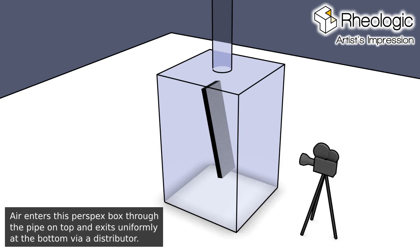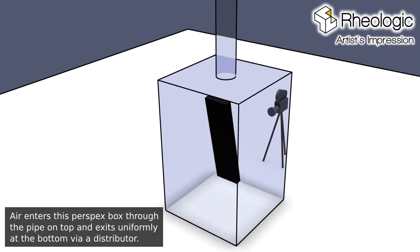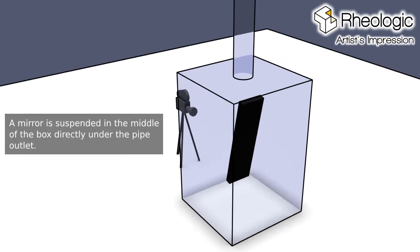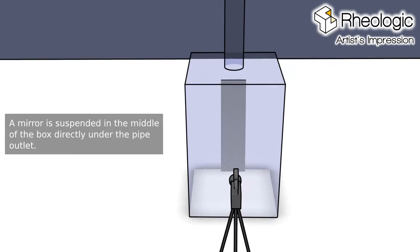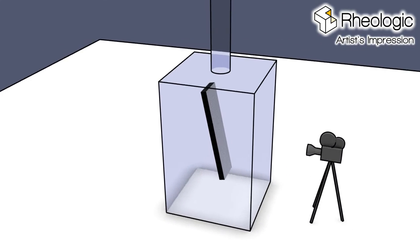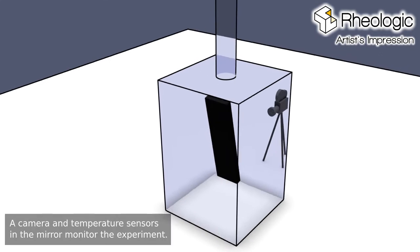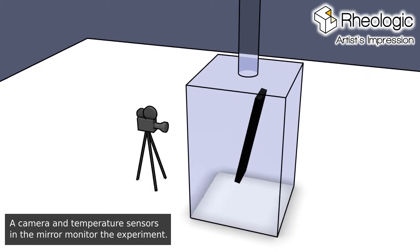Air enters this perspex box through the pipe on top and exits uniformly at the bottom via distributor. A mirror is suspended in the middle of the box directly under the pipe outlet. A camera and temperature sensors in the mirror monitor the experiment.